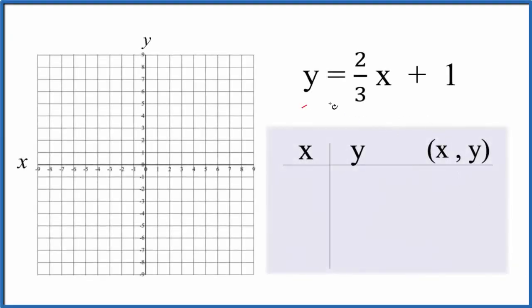Let's graph the linear equation y equals two-thirds x plus one, and we're going to do this two ways. First we'll use a table of values, then we'll check our work with slope-intercept formula. So let's put some values in for x and see what we get for y.